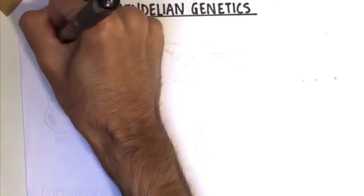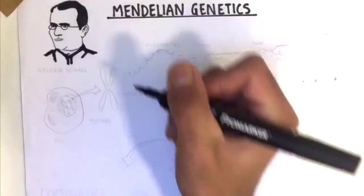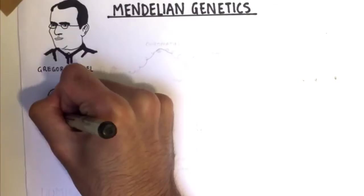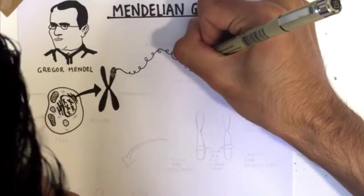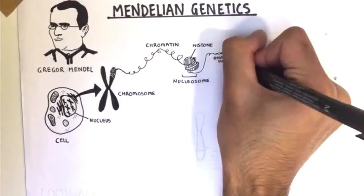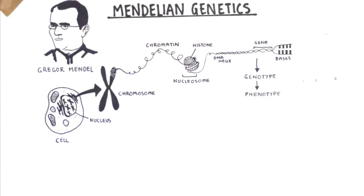Mendelian genetics basically refers to a set of rules that concern all organisms that reproduce sexually. By organisms, I refer to all multicellular animals and plants. So when we look at this cell, we can see in the nucleus there are chromosomes. And then when we look more closely at the chromosome, we can see that the DNA actually intertwines with histone to form a structure called nucleosomes.